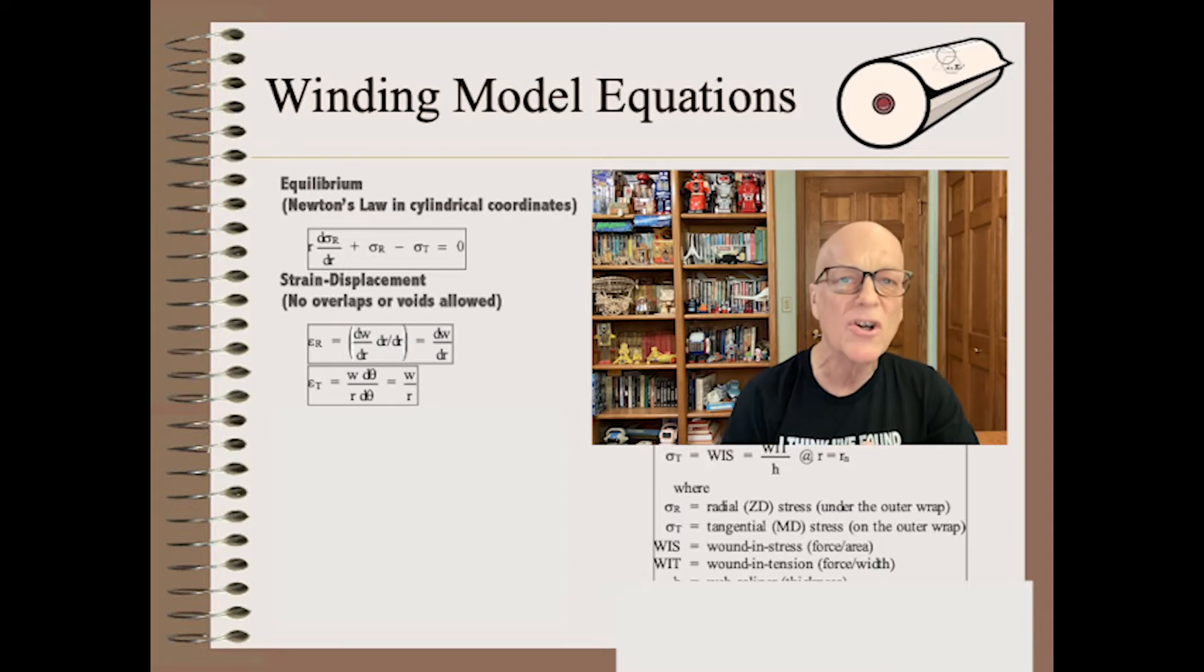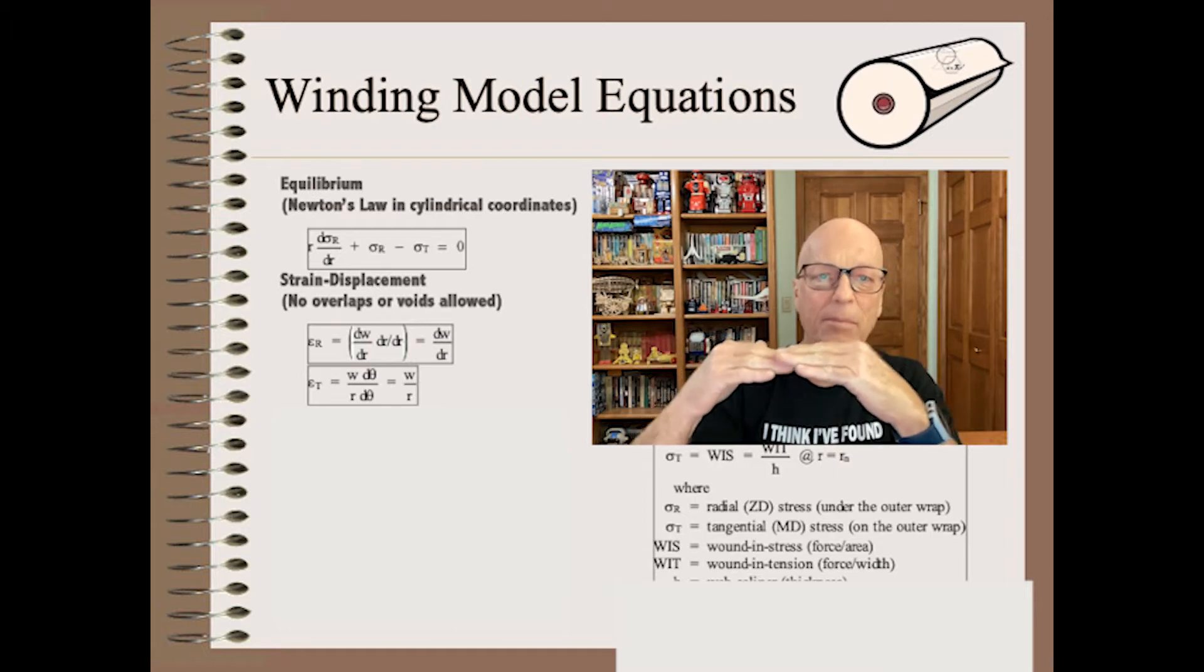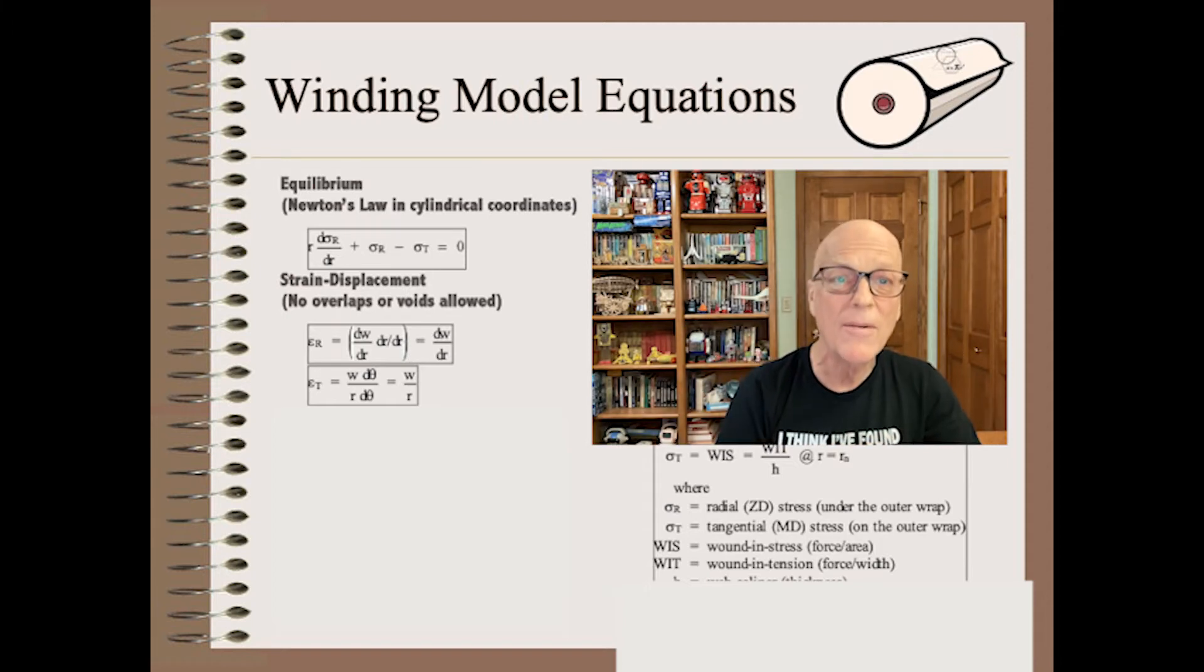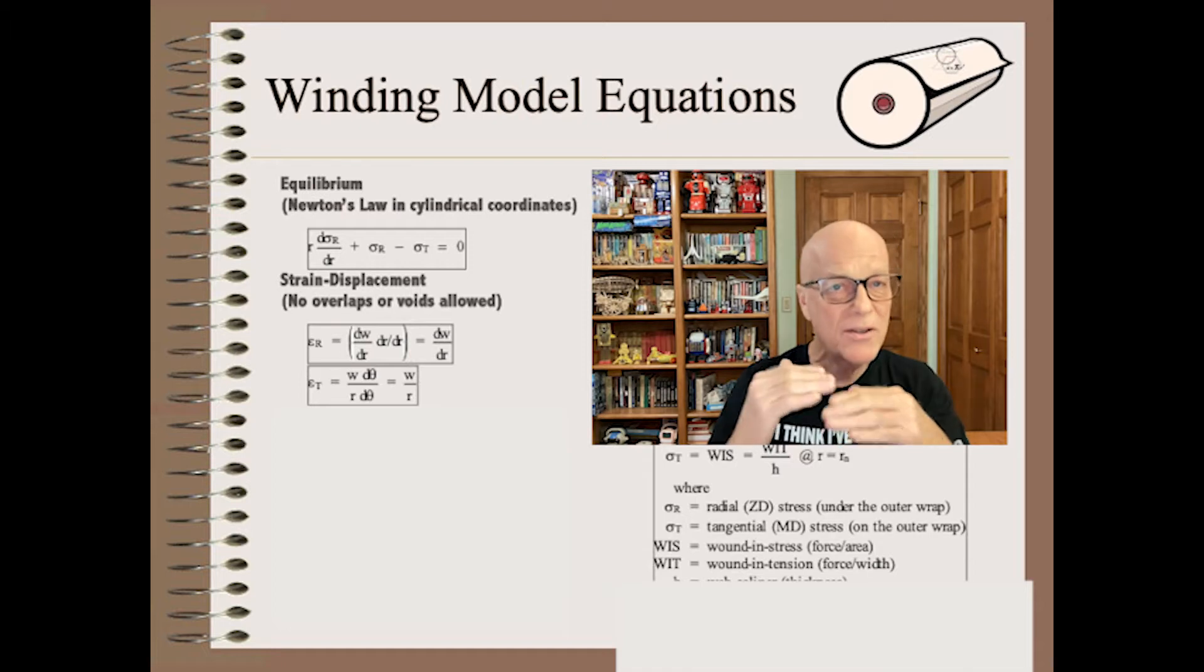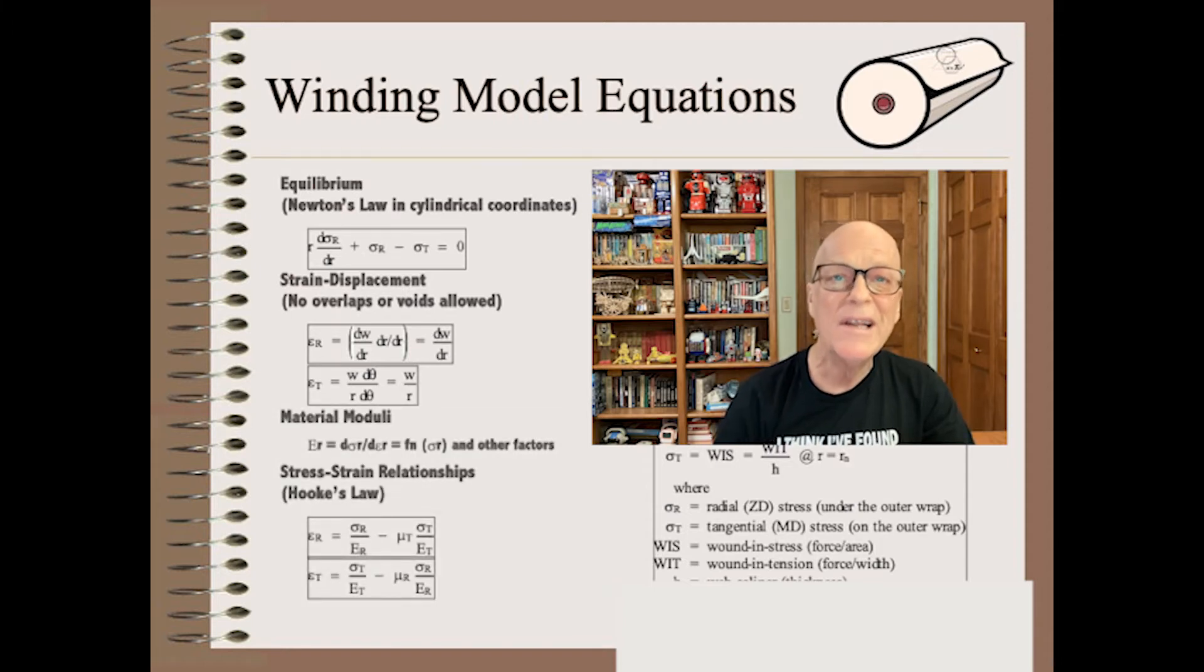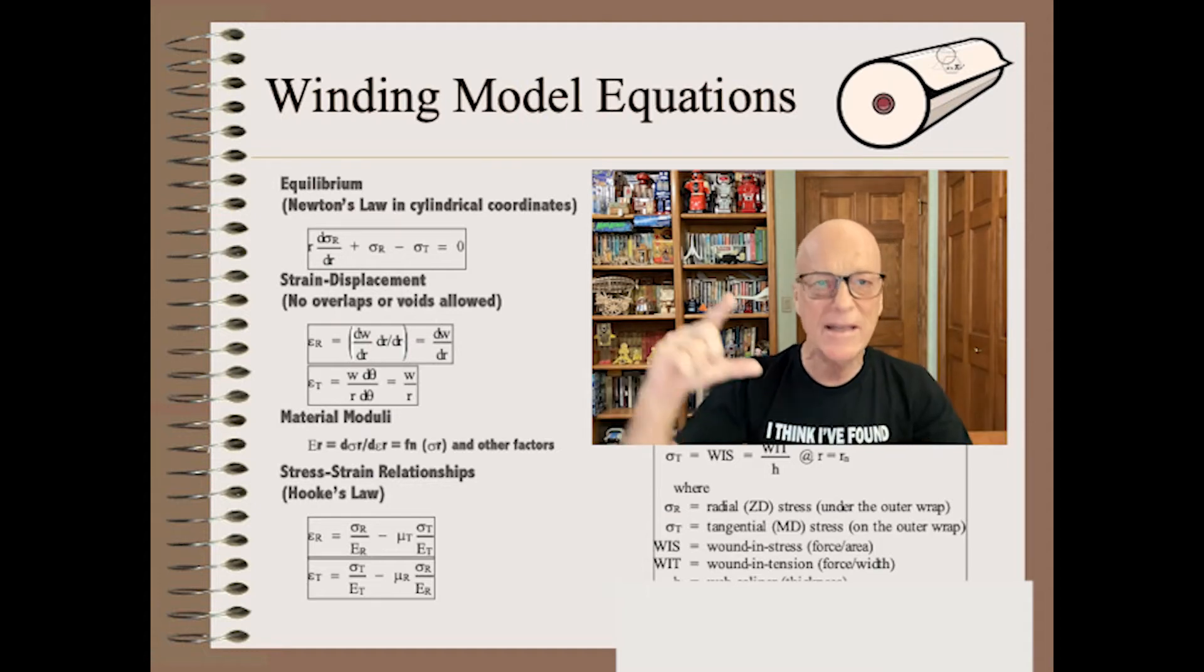The second equations are called the strain displacement equations. In layman's terms, it means that two layers cannot occupy the same space at the same time, nor can there be any gaps. While you might have gaps in your roll, it's unlikely that two wraps will be in the same location, unless you have a really bad transporter malfunction. The next equation says that materials are springy. The next two equations say that when you stretch a material, it gets thinner.